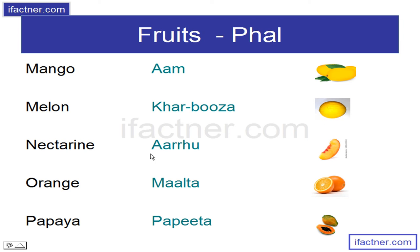Aadu – Nectarine, N-E-C-T-A-R-I-N-E, Nectarine. Malta – Orange, Orange. Papita – Papaya, P-A-P-A-Y-A, Papaya.